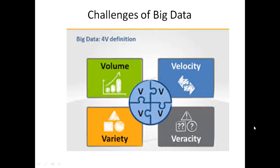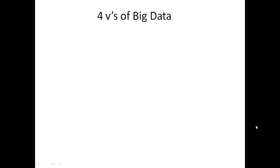There are four V's in Big Data. These V's are the four challenges of Big Data. They are Volume, Velocity, Variety, and Veracity. We will see each one by one. First we will see about Volume. How big?